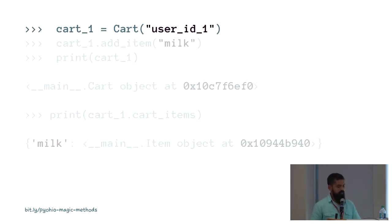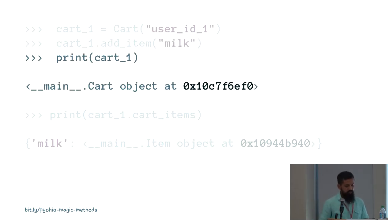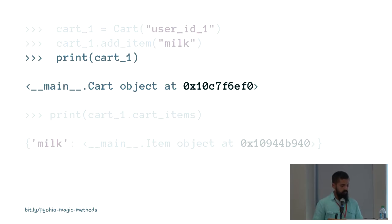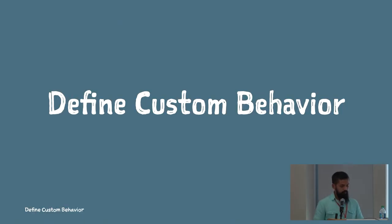If we were to initialize this class, we would do something like this. I'm initializing Cart with a user ID of one, adding some milk into the cart, and when I print out the cart object, we see that Python by default prints out the name of the class along with the memory location. Similarly, when I print out the cart_items instance attribute, we see the string 'milk' along with the representation of the item object.